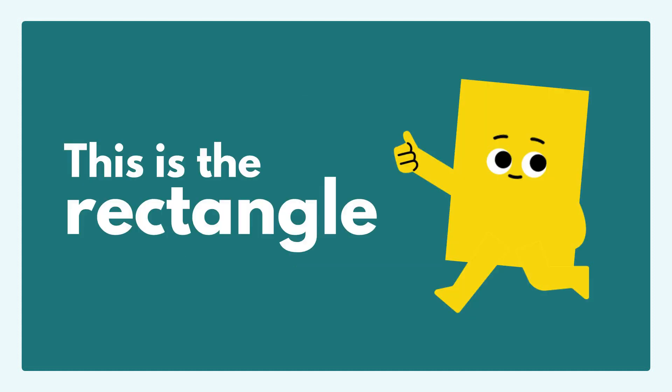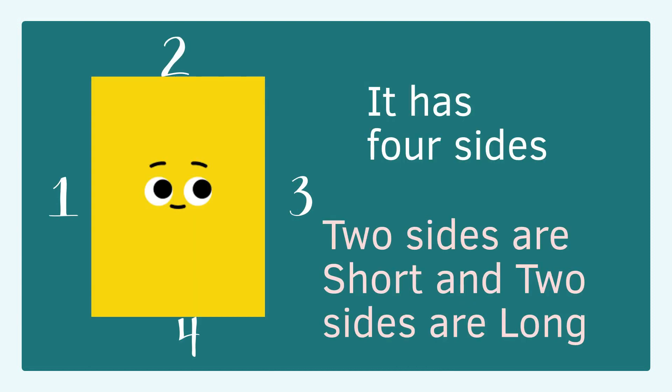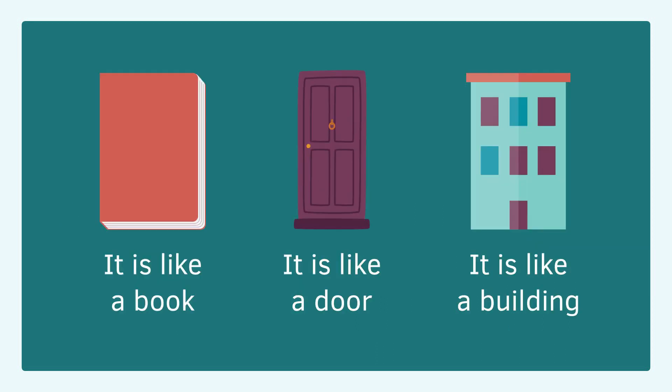This is the rectangle. It has four sides. Two sides are short and two sides are long. Example of rectangles: a book, a door, a building.